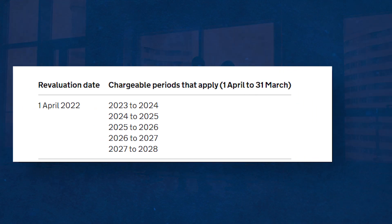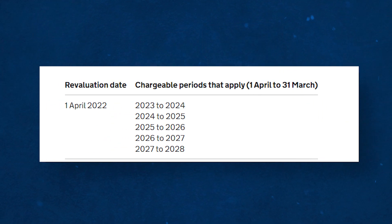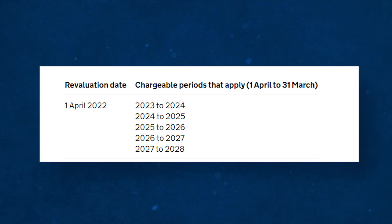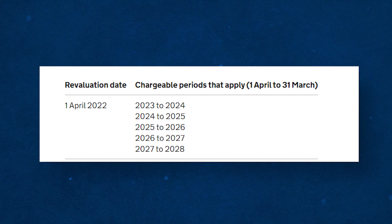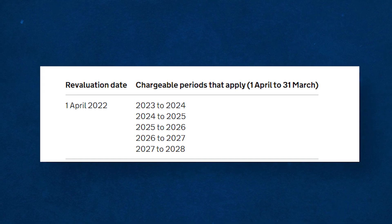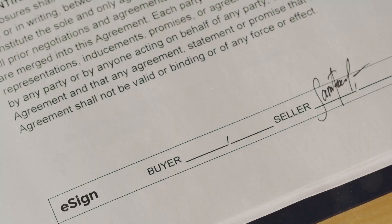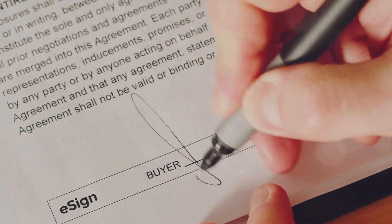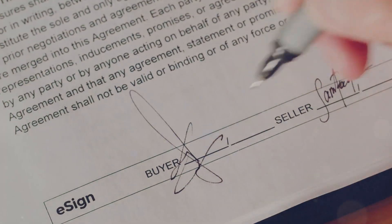For the five chargeable periods from 2023, the revaluation date is the 1st of April 2022. You must revalue the properties you owned on or before the 1st of April 2022 using that date. If you acquire a property after the 1st of April 2022, use the acquisition date.